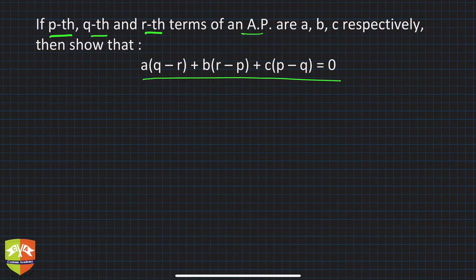p, q, and r are the indices, that is the position or term number, the location of that particular term. And a, b, c are the values of the terms. So it's like the sixth term, seventh term, eighth term are 10, 9, and 11, something like that. So you have to prove this one.